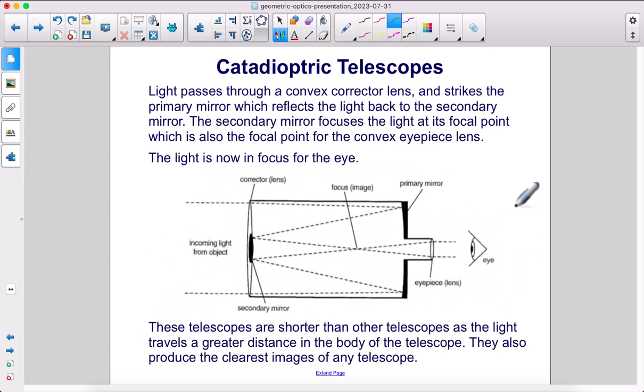And finally, catadioptric telescopes. Light passes through a convex corrector lens and strikes the primary mirror, which reflects the light back to the secondary mirror. The secondary mirror focuses the light at its focal point, which is also the focal point for the convex eyepiece lens. The light is now in focus for the eye. These telescopes are shorter than other telescopes, as the light travels a greater distance in the body of the telescope. They also produce the clearest images of any telescope.